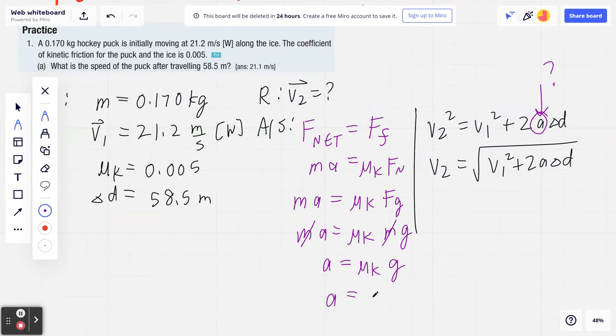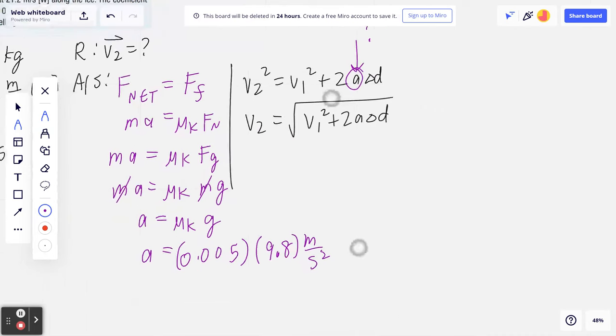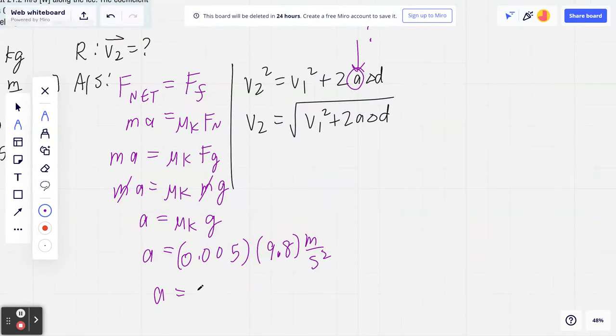So a equals, from the given, 0.005. Gravity could be 9.8, 9.81, 9.805. I'm going to stick to 9.8 for now, and you can put in all the units. This is meters per second squared. So if you work it out, this equals 0.049 meters per second squared.